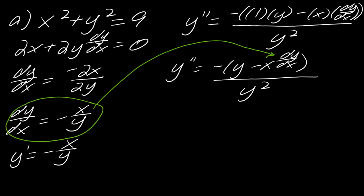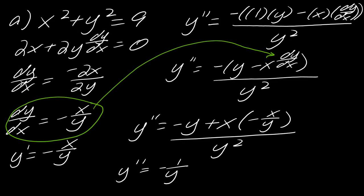and then what I get is y double prime equals, so let me distribute this negative, and this becomes negative y plus x times negative x over y, all of this over y squared, and now you can just try to simplify wherever possible. So I would probably break this up into negative 1 over y plus x, or no, minus x squared over y cubed, and so that would be how that would simplify.